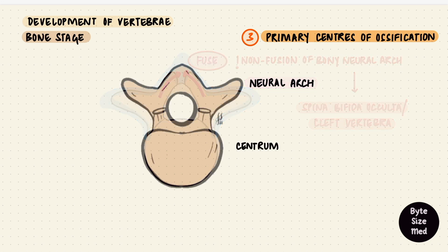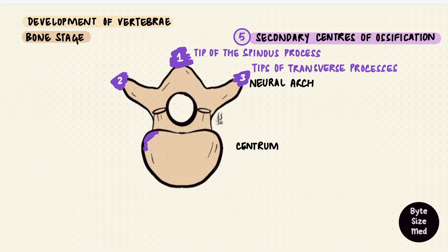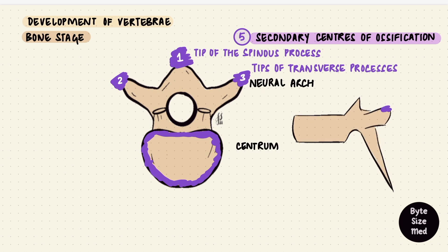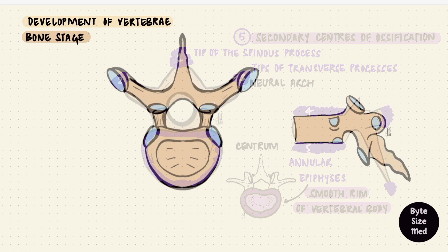The secondary ossification centers appear at puberty and are five in number: one for the tip of the spinous process, one each for the tips of the transverse processes, and two annular epiphyses. Looking from the side, that is the tip of the transverse process, the tip of the spinous process, and the two annular epiphyses — one above and one below. These are superior and inferior to the vertebral body, and when they fuse with the body, that creates the smooth rim. So the smooth rim is from the annular epiphyses. Once all these centers fuse, we have a complete vertebra.